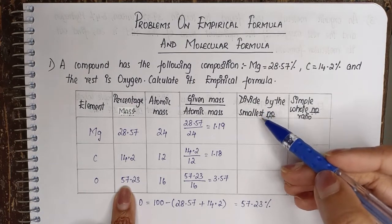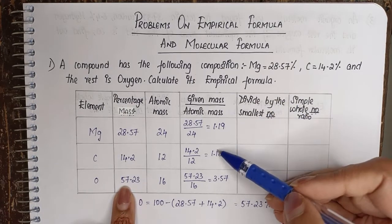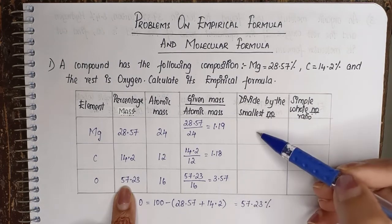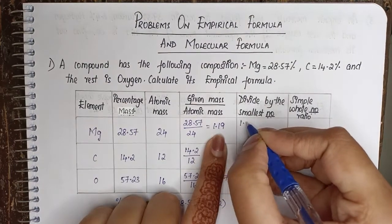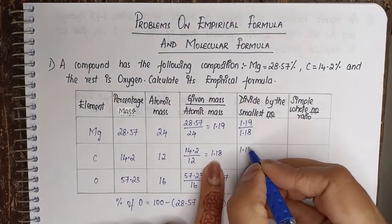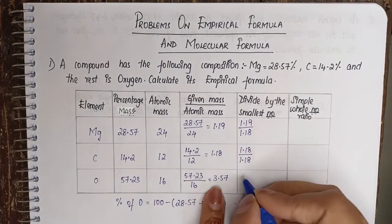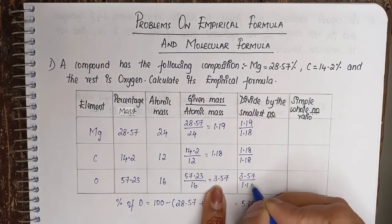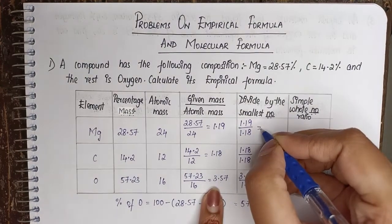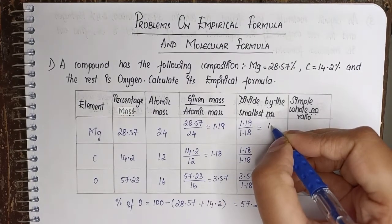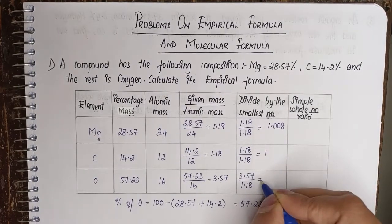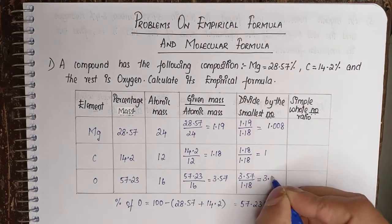Now in the next column, to calculate this fifth column, we need to find out the smallest number. 1.18 is the smallest number. So whatever value we have, you need to divide it by the smallest number. For magnesium we have 1.19 divided by 1.18. Similarly here 1.18 divided by 1.18, and 3.57 divided by 1.18. So each value is divided by the smallest value in the previous column. When we calculate this you will get 1.008, 1, and 3.025.